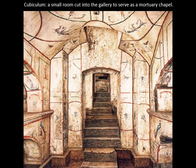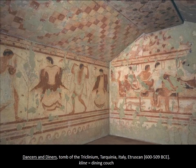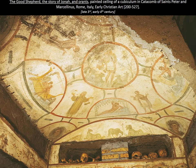Here's the interior of a cubiculum for a fairly wealthy family, and if you notice it is completely painted with frescoes. This should be familiar because it's exactly what the Etruscans were doing — decorating the interior spaces of their tombs to dissolve the walls of the subterranean space and make it feel much brighter. We're going to look closely at the ceiling painting in this cubiculum within the catacomb of St. Peter and Marcellinus.